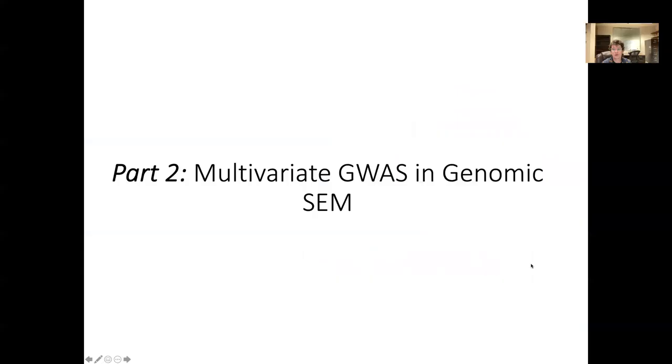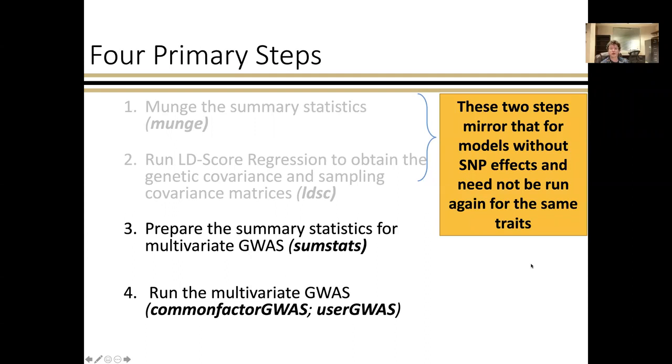Moving on to part two, I want to talk about how you would run multivariate GWAS in genomics SEM. And to be clear, you don't have to do both of these. You can certainly run a genome-wide model in part one. Don't publish that alone. You don't have to bring in these individual SNP effects, but I did want to show that because oftentimes for people, the multivariate GWAS space is what's of most interest. This includes four primary steps, the first two of which mirror what we already did, which is to run mung and LD score regression. And you don't need to redo that. We're only going to go over the last two steps of running the sum stats function and the multivariate GWAS functions, common factor GWAS and user GWAS.